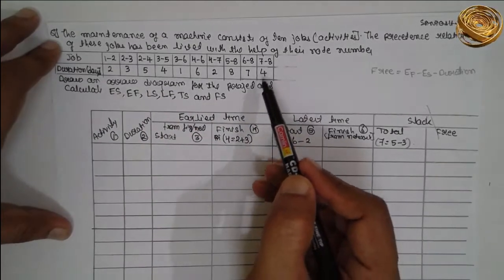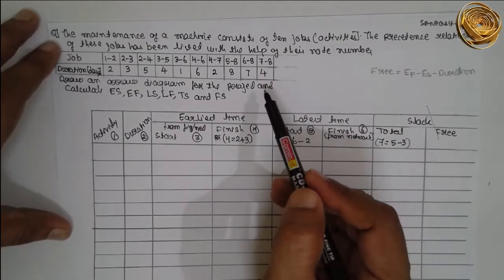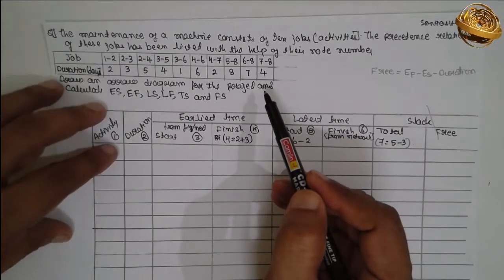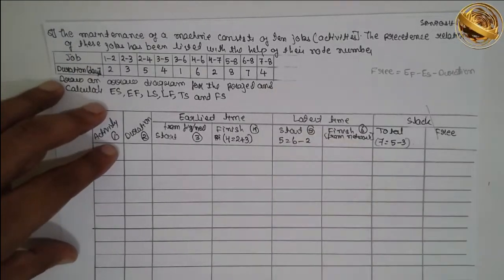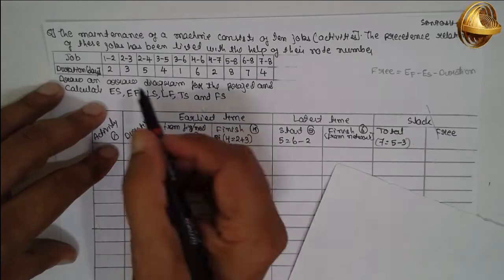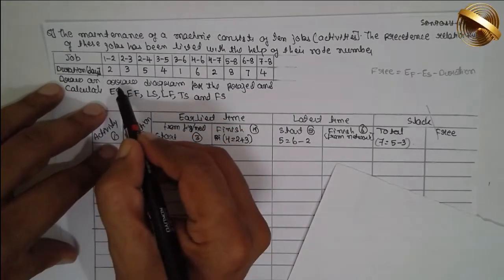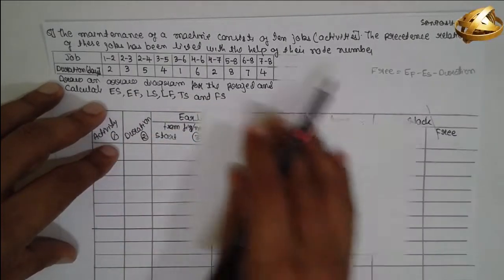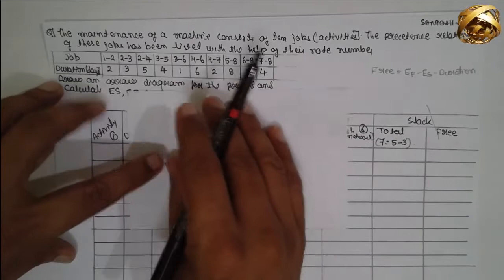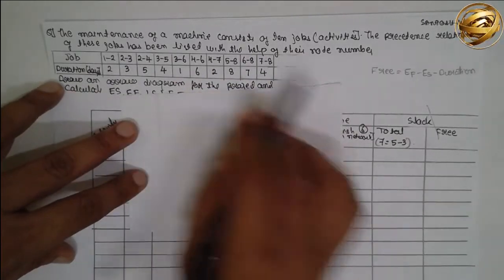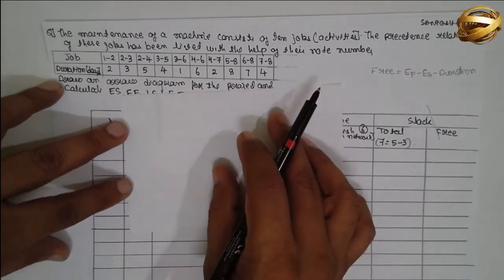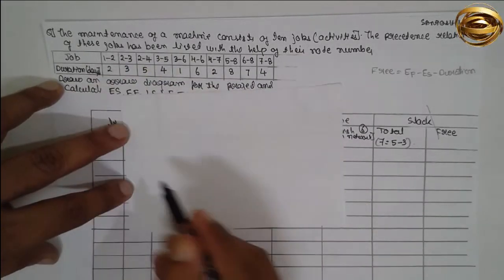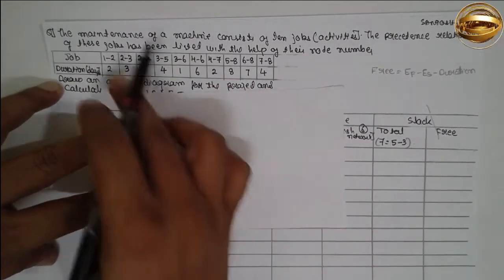Now, first, based on this data, we are going to construct the network diagram. Today's concept uses the activity-on-arrow method. I will construct the diagram based upon the job and duration.